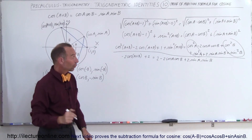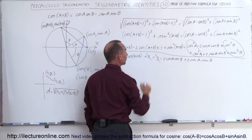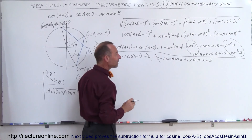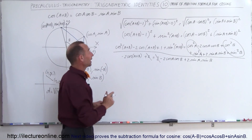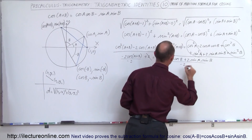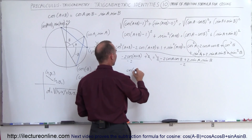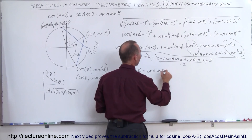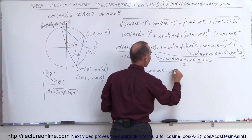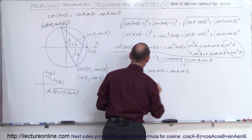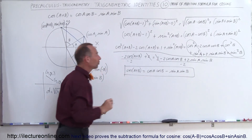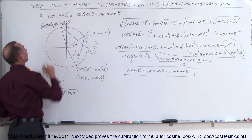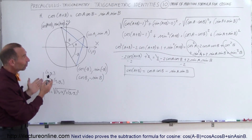The plus two on the left cancels with the plus two on the right. We're left with negative two times cosine of A plus B on the left, and negative two times cosine A cosine B plus two times sine A sine B on the right. Dividing everything by negative two gives us cosine of A plus B equals cosine A times cosine B minus sine A times sine B, which is exactly the addition formula for cosine.